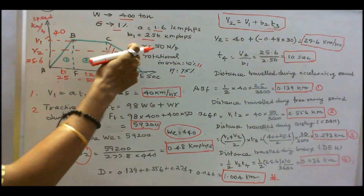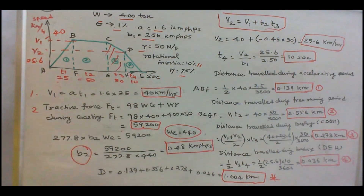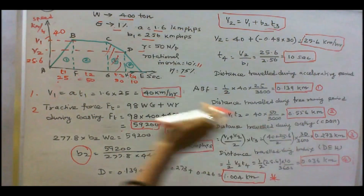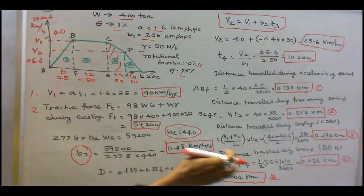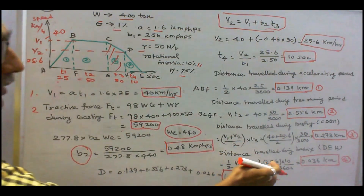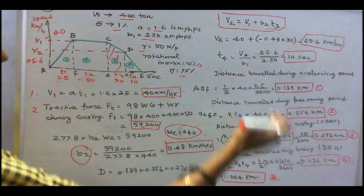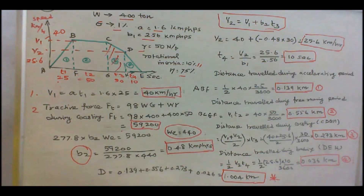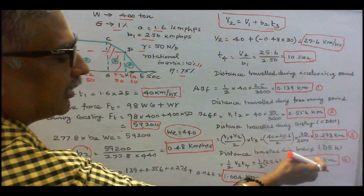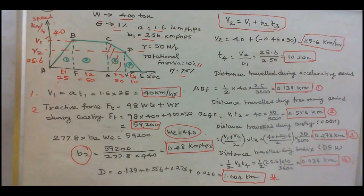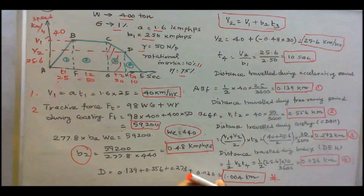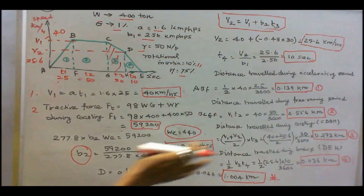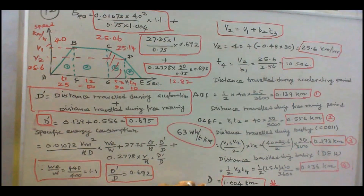Braking duration T4 = V2 / B = 25.6 / 2.56 = 10 seconds. Distance during braking (area DEH) = ½ × 25.6 × (10/3600) = 0.036 km. Total distance D = 0.139 + 0.556 + 0.273 + 0.036 = 1.004 km.